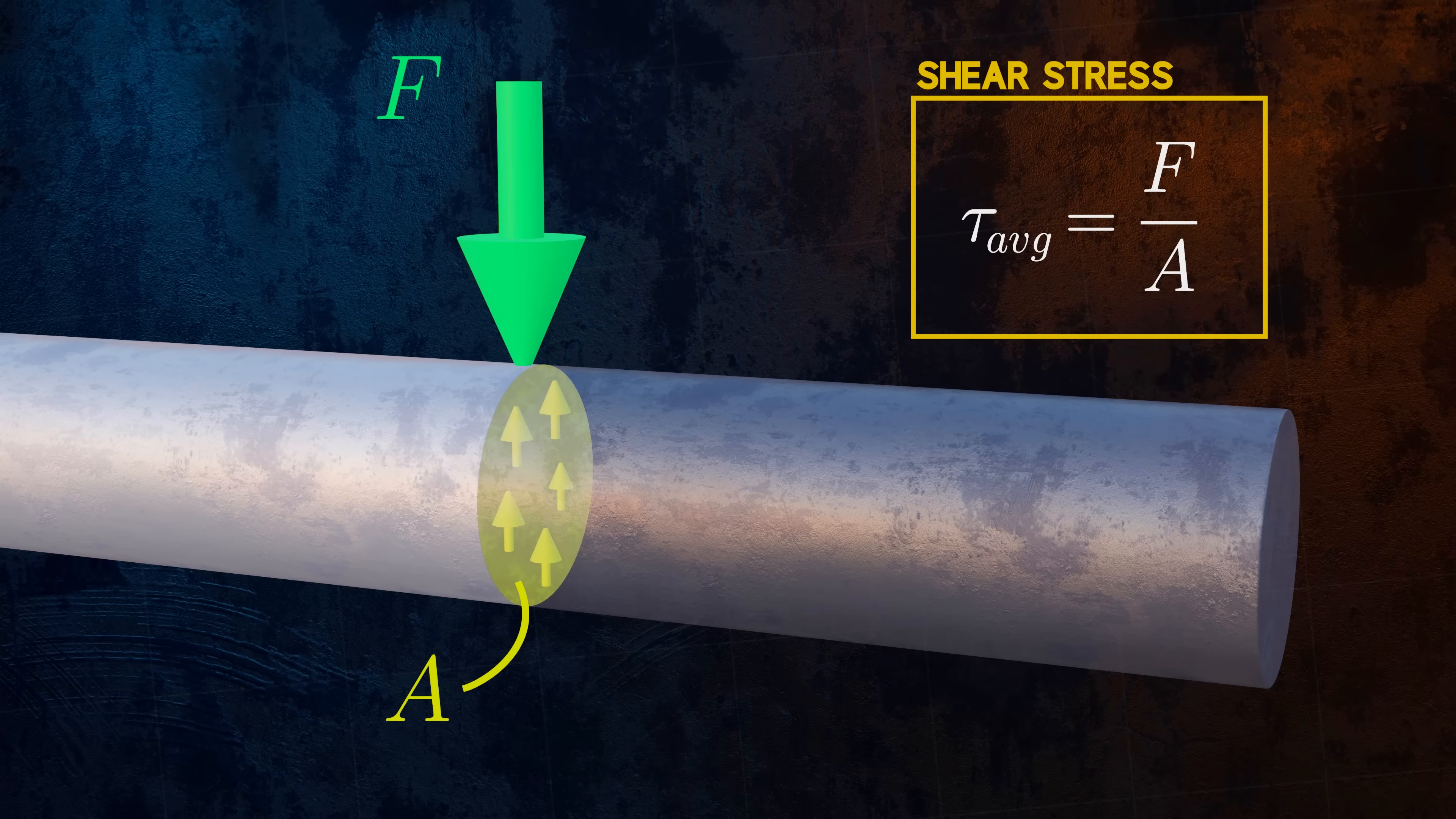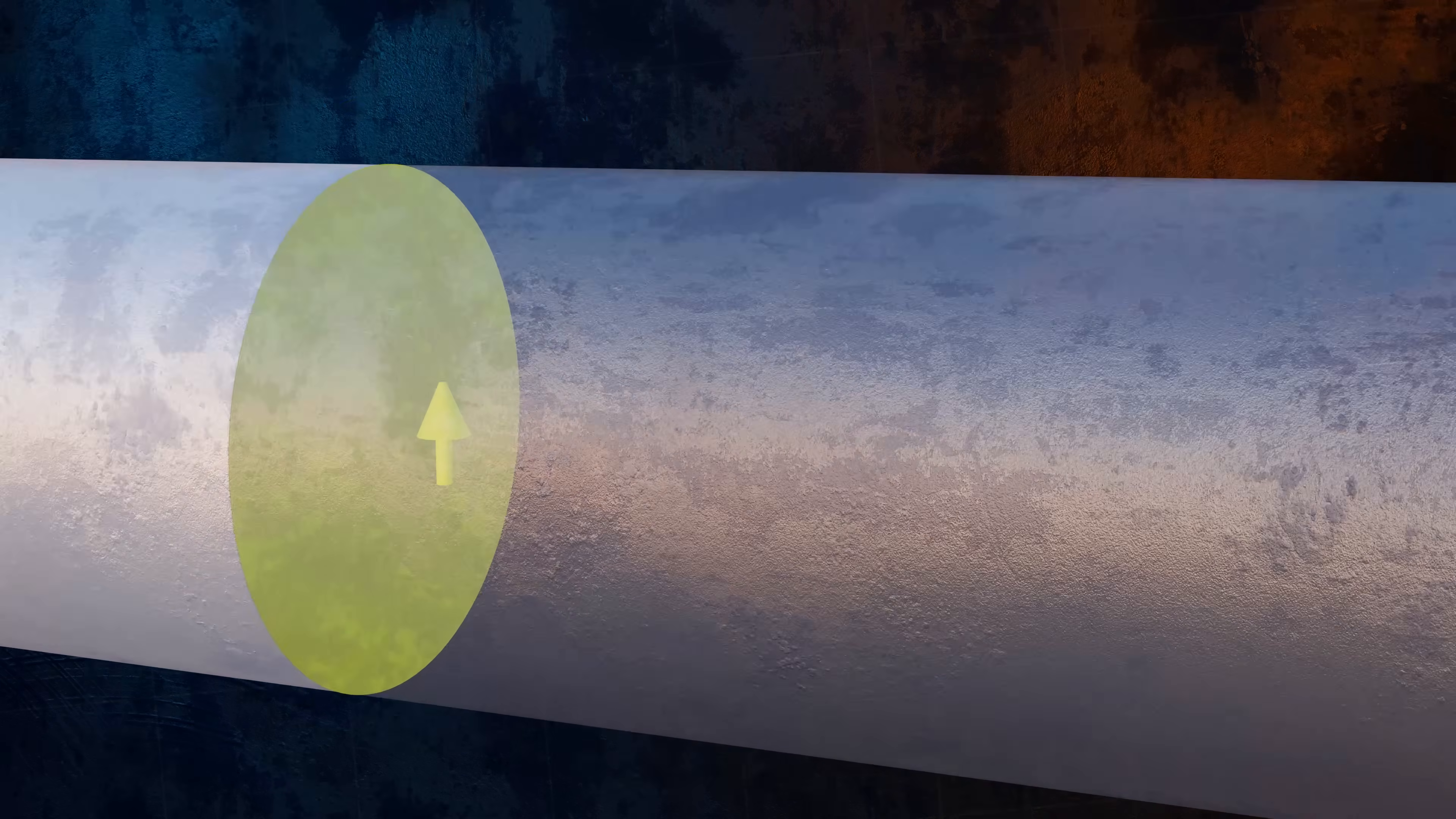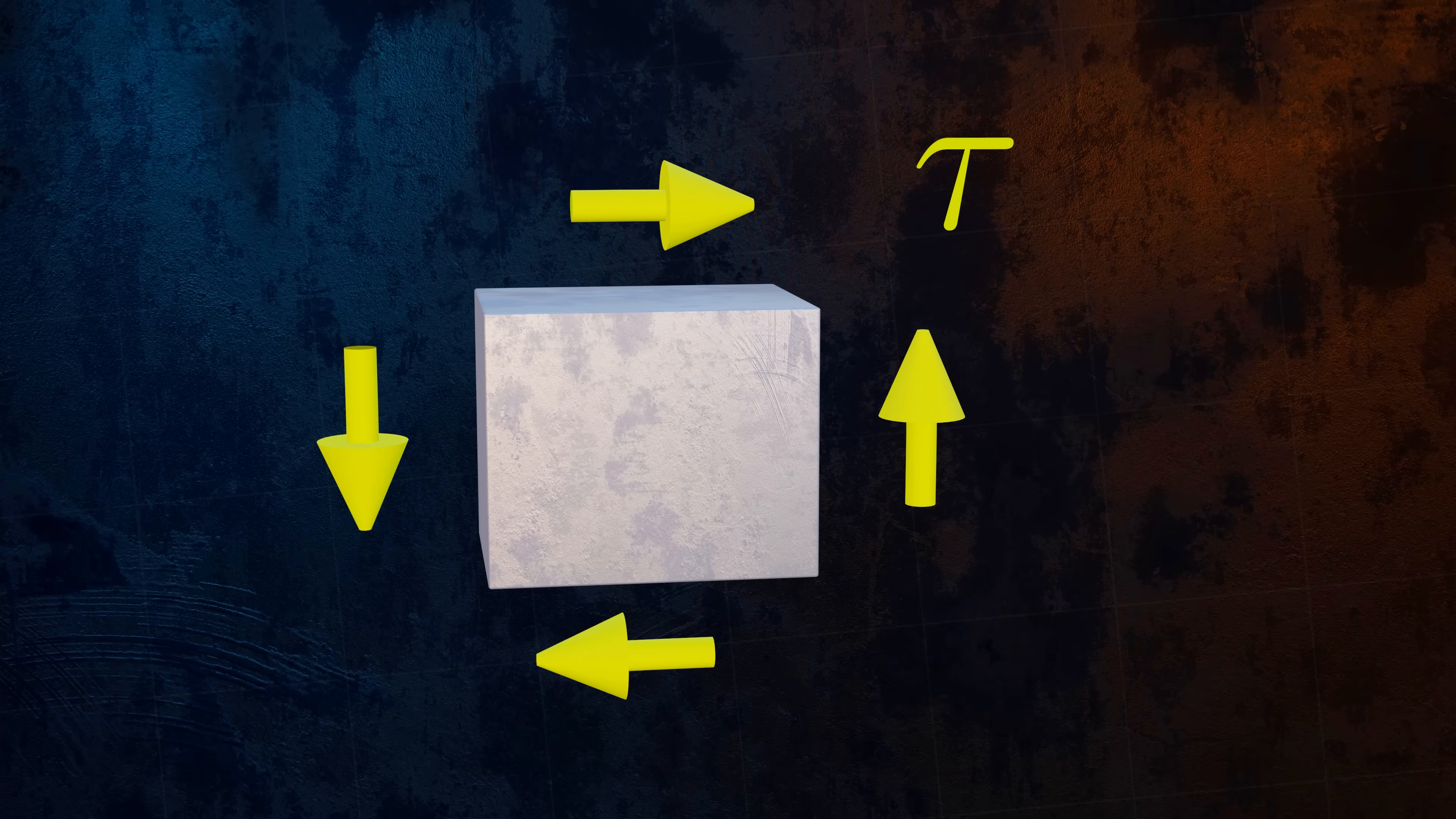We can better understand shear stresses by looking at the stresses acting on a small element within our bar. We have a shear stress on one face of the element. But the element needs to be in equilibrium, so we must also have shear stress on the opposite face, in the opposite direction. And to maintain rotational equilibrium, we must also have two additional shear stresses, as shown here. These four stresses all have a magnitude equal to tau, and define the shear stresses acting at a single location.